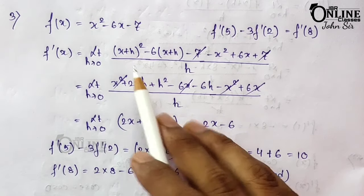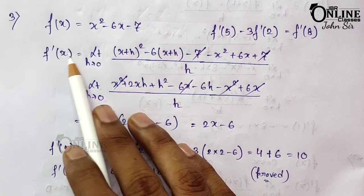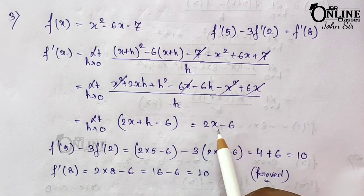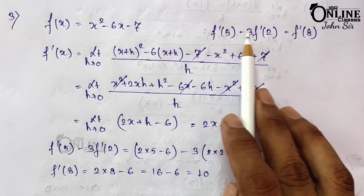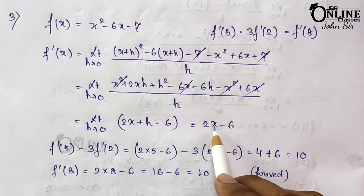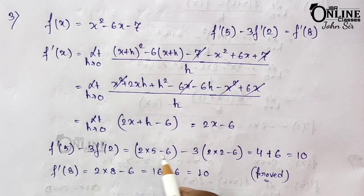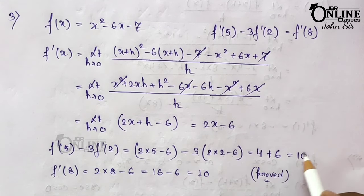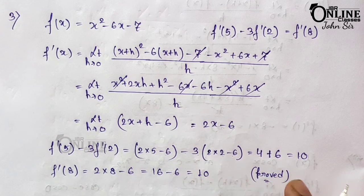Sum number 3 is a similar kind of problem. Here f(x) is given and by definition you can easily find f'(x) = 2x - 6. You have to prove that f'(5) - 3·f'(2) = f'(8). So f'(5) = 2(5) - 6 = 4, and 3·f'(2) = 3·(2(2) - 6) = 3·(-2) = -6, giving 4 - (-6) = 10. Also f'(8) = 2(8) - 6 = 10. So the upper value equals the lower value, and it is proved.